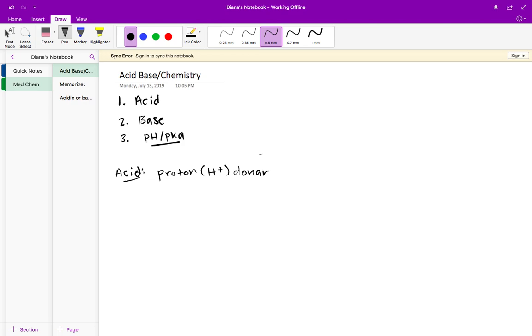An acid is a proton donor, whereas a base is a proton acceptor. We can start off by looking at an acid.